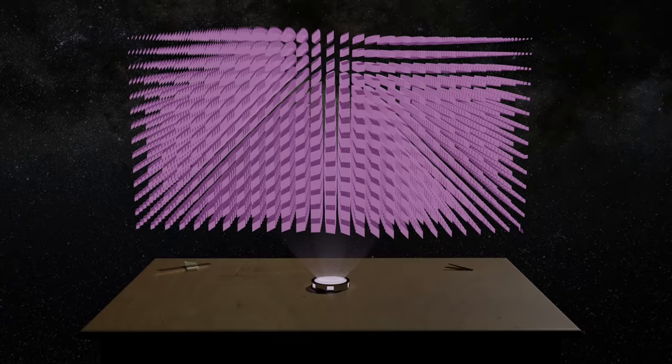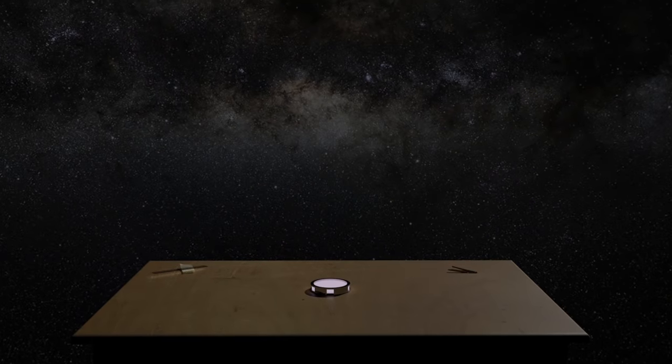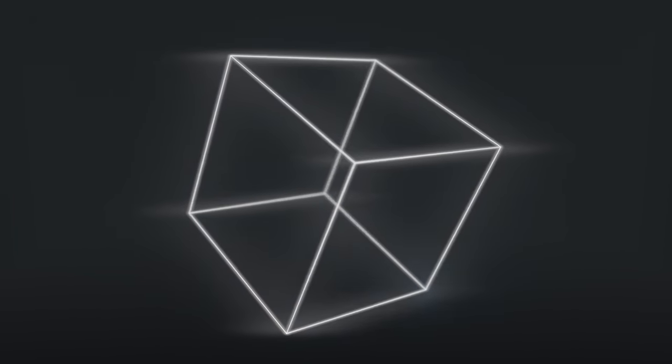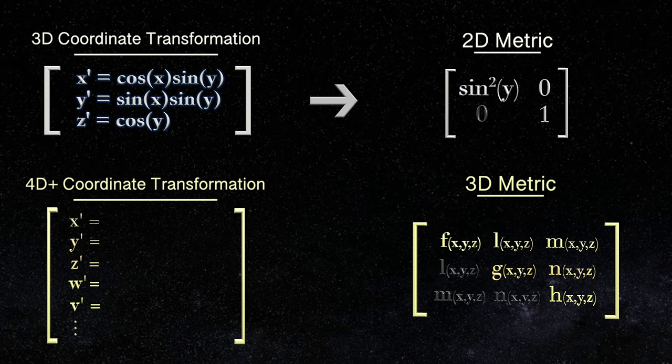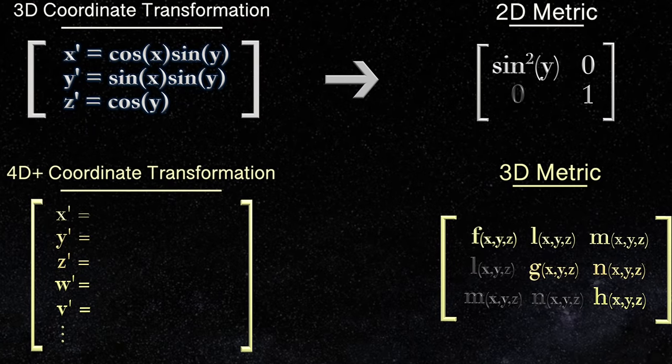However, there's a problem with this. The problem isn't that we can't imagine more than three dimensions. Rather, it's that we may simply not be in possession of a higher dimensional coordinate transformation to begin with. And backwards deducing one may not be possible or physically meaningful.